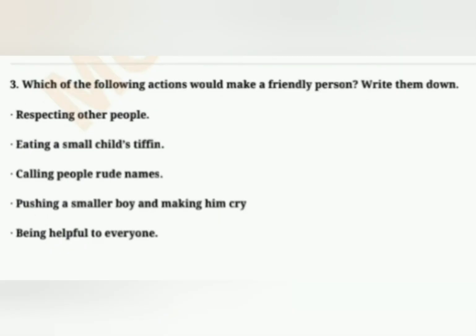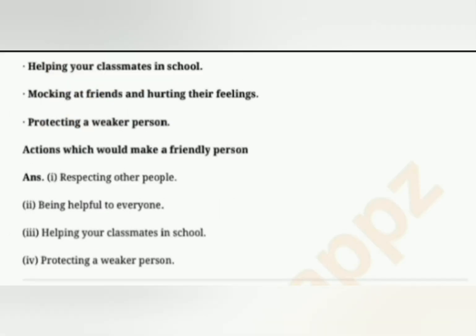Exercise 2: Which of the following actions would make a friendly person? Write them down. Options include: respecting other people; eating smaller children's tiffin; calling people rude names; pushing a smaller boy and making him cry; being helpful to everyone; helping your classmates in school; mocking at friends and hurting their feelings; protecting a weaker person. The actions that make a friendly person are: respecting other people, being helpful to everyone, helping your classmates in school, and protecting a weaker person.